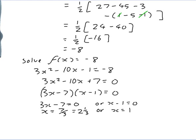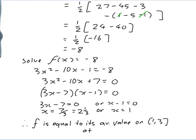Both of those numbers are in the interval [1, 3]. So our final answer is that f equals its average value on [1, 3] at x equals 1 and also at x equals 2 and 1 third.